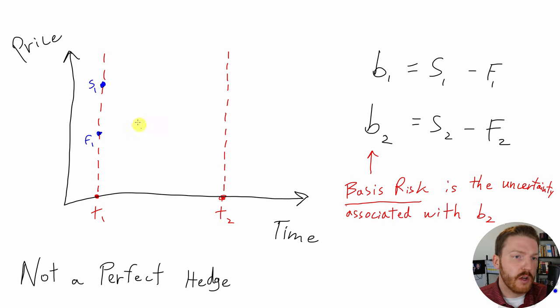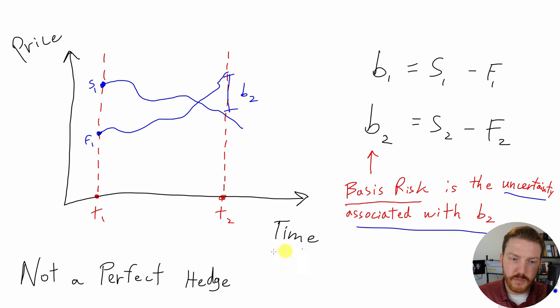But the price of platinum doesn't move exactly with the price of gold. So now, we could be looking at a situation where our price of gold, S1, over time is moving like this. And then, our forward contract on platinum is actually moving like this. And now, at the end, we end up with this B2, that's this large negative value for B2 here. And we're seeing that this basis risk is this uncertainty associated with B2 when we don't have a perfect hedge. And we can't offset our underlying spot position perfectly as a miner of gold.